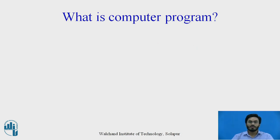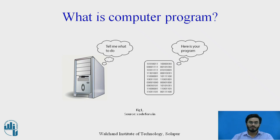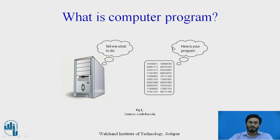It would be a good time to recall what is meant by a simple computer program. Generally, a computer program is a set of code written in any programming language like C, Java, or Python, which is later converted into machine code by using compilers and interpreters. The computer asks what to do, and that program converted into ones and zeros is transferred onto the machine in a language computers can understand.